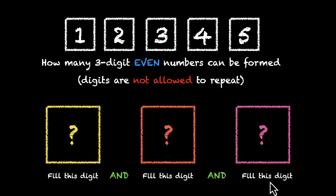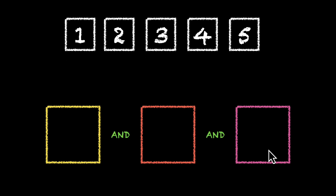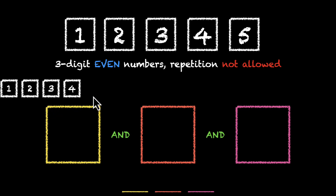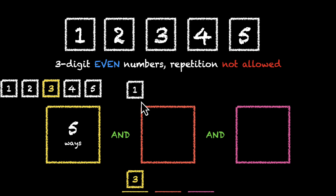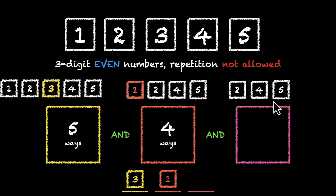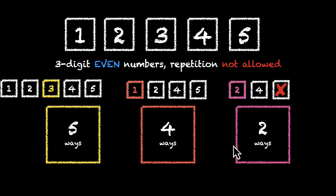So let's do this together. We have to fill this digit, this digit, and this digit, and make sure the last digit is even. For the first box we have 1, 2, 3, 4, 5 — 5 ways. Say it picks 3. For the orange box, 3 is gone, so we have 1, 2, 4, 5 — only 4 options. Say it picks 1. For the last pink box we have 2, 4, and 5; we can't pick 5 because it's odd, so only two options: 2 and 4. That gives us 5 × 4 × 2 = 40 ways.